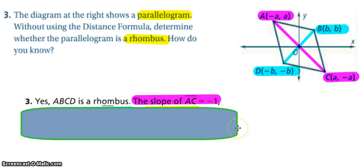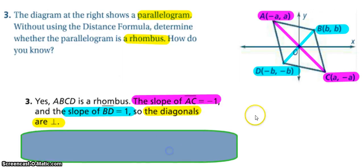And again, it's rise over run, so we have a rise of negative 2A and a run of positive 2A. And then the slope of BD is a positive one, so we know that this is a perpendicular intersection, so the diagonals must be perpendicular, so it must be a rhombus.